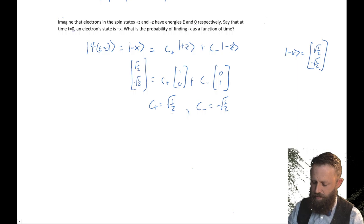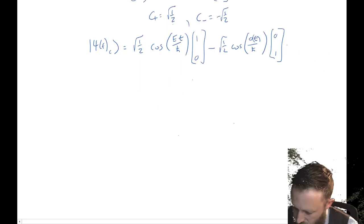We can immediately write down the wave function as a function of time. That's just equal to √(1/2) times cosine of Et over ħ times plus z, which is [1, 0]. And then, since the constant is minus, we subtract √(1/2) cosine of zero times t over ħ times minus z, which is [0, 1].